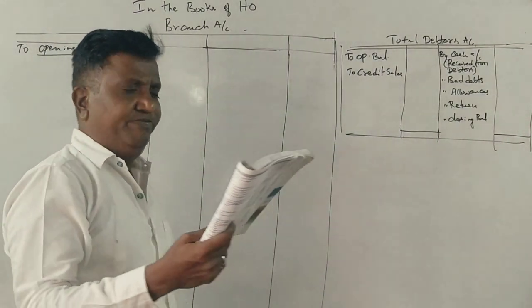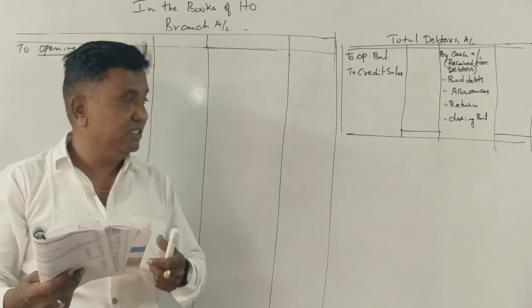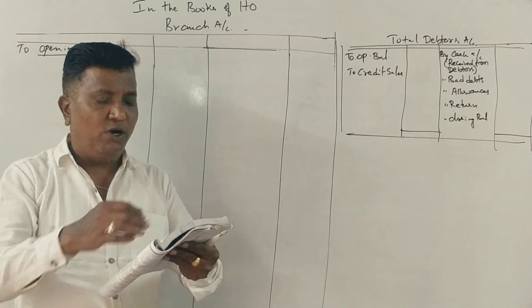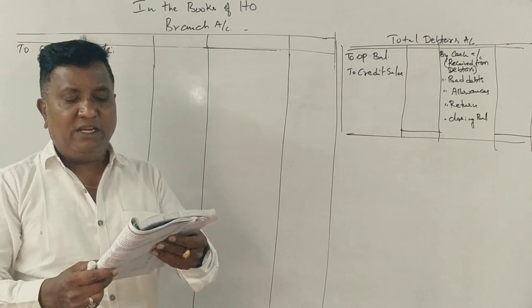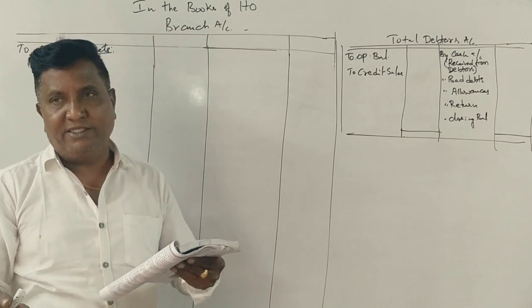Students, I have a question about branch accounting. It is interesting to answer that question. From the following particulars, prepare the necessary ledger accounts in the books of head office under debtor system.